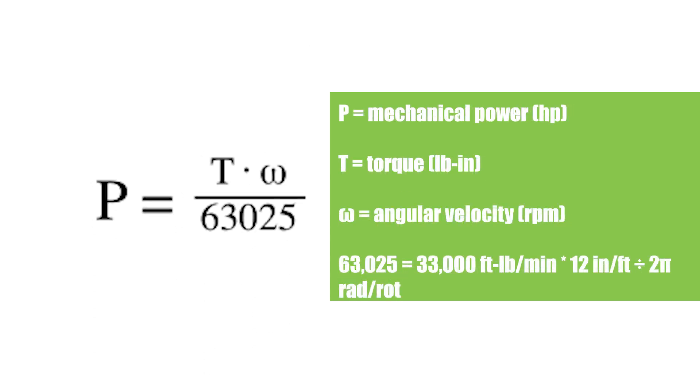And when torque is given in pound-inches and speed in RPM, horsepower equals torque times angular velocity divided by the conversion factor of 63,025.